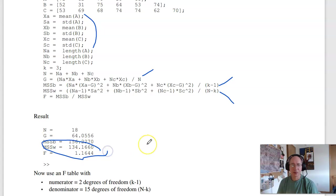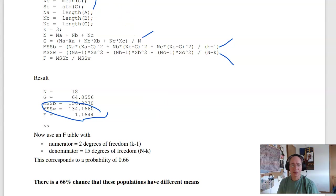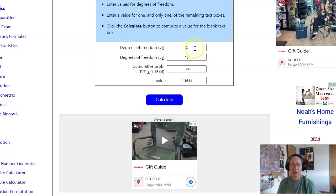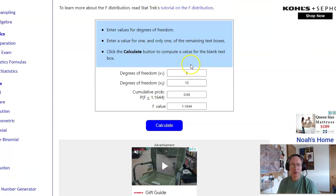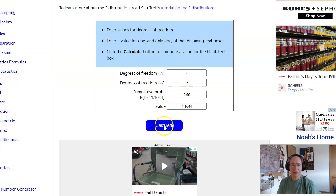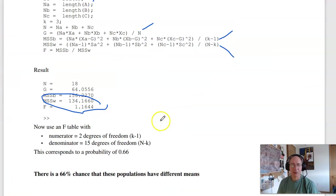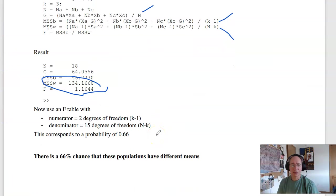From StatTrack, I can then input that. I've got two degrees of freedom in the numerator, 15 in the denominator, and an F-score of 1.1644. Calculate, and you get 66%. So there's a 66% chance this data has a different mean.